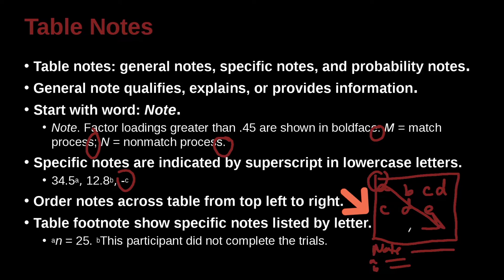So for example, here we have a is actually n equals 25 is a note, and then b, the participant did not complete the trials. So those are the little footnotes we can add.